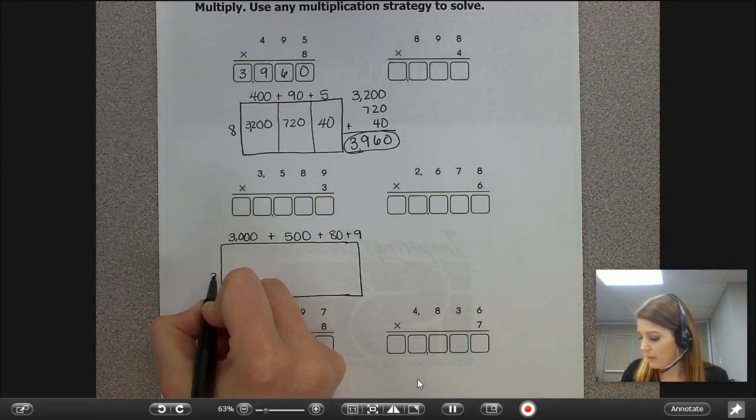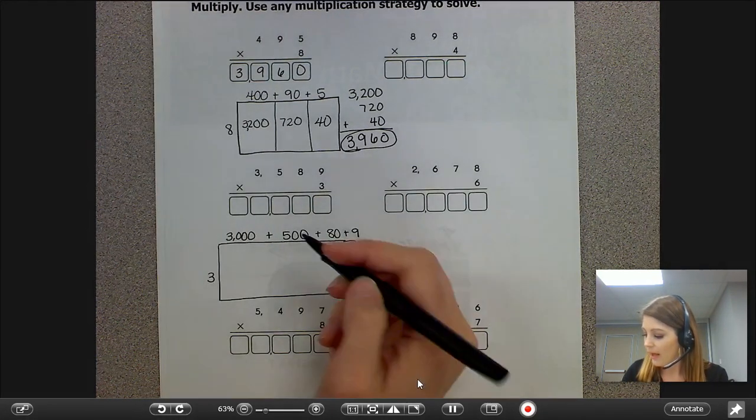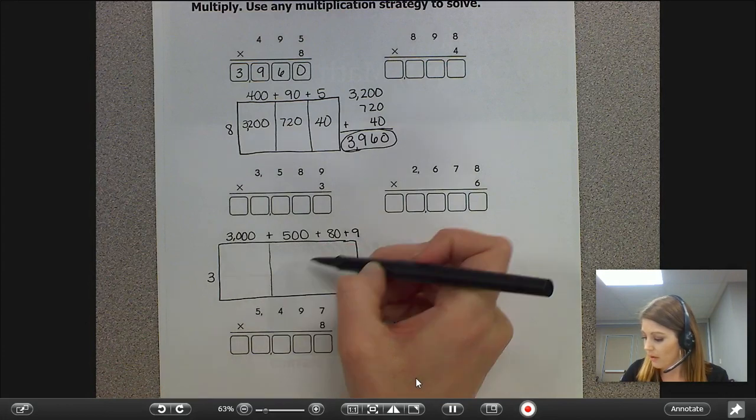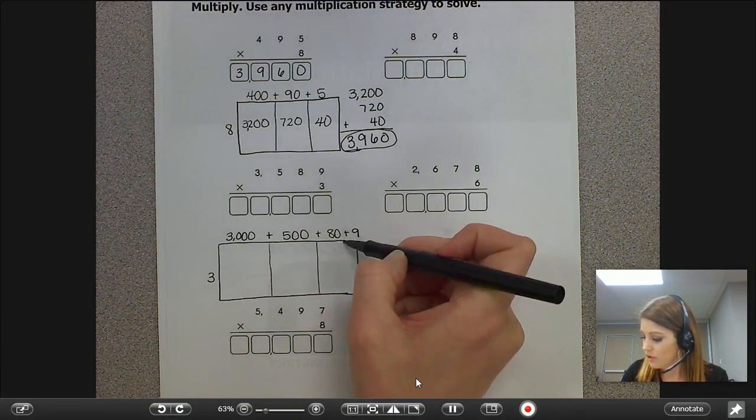We're multiplying it by three ones and I draw a little line in my rectangle to separate each section.